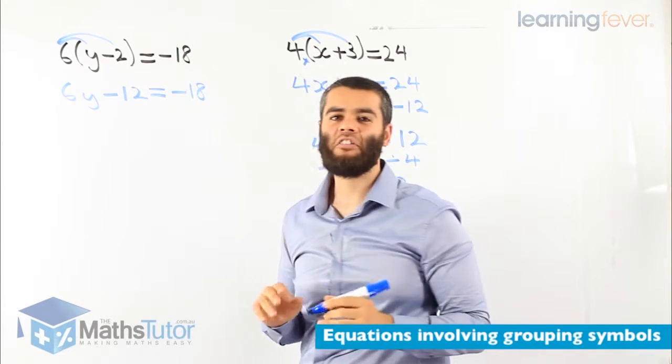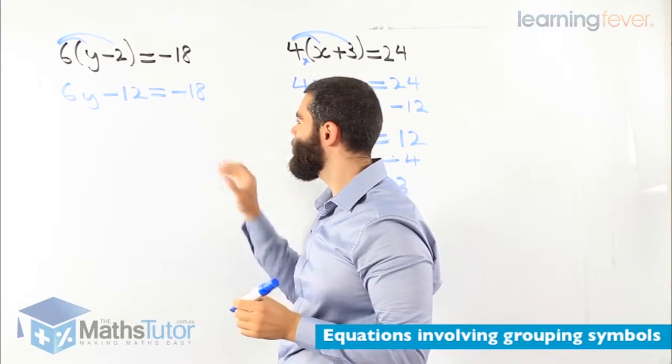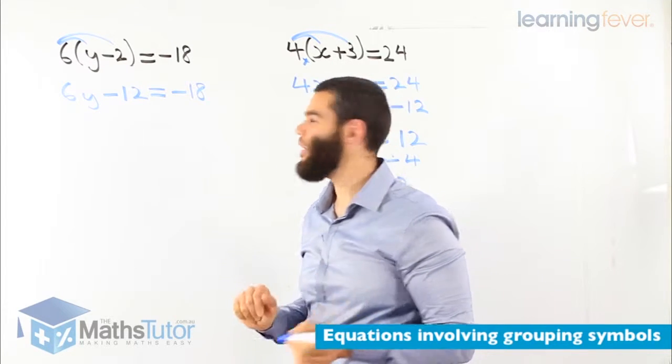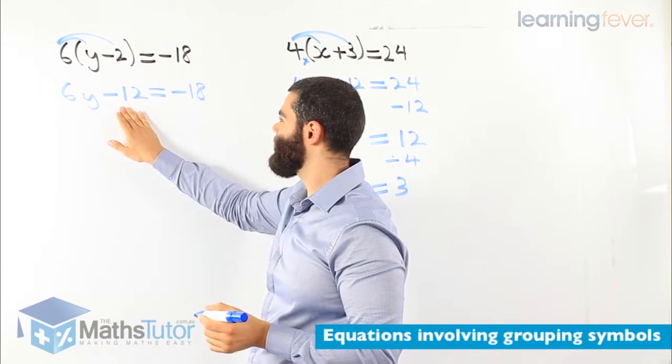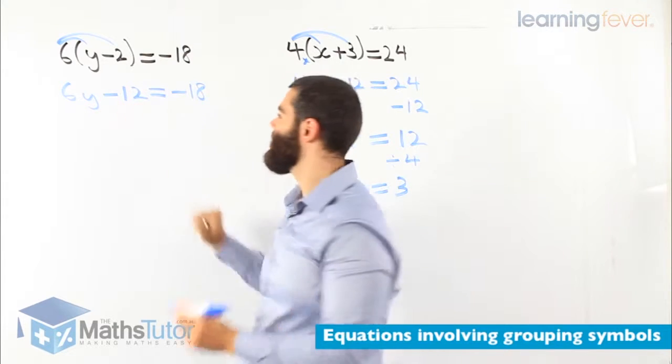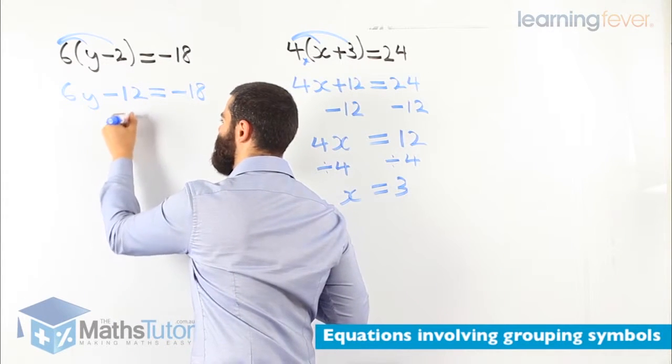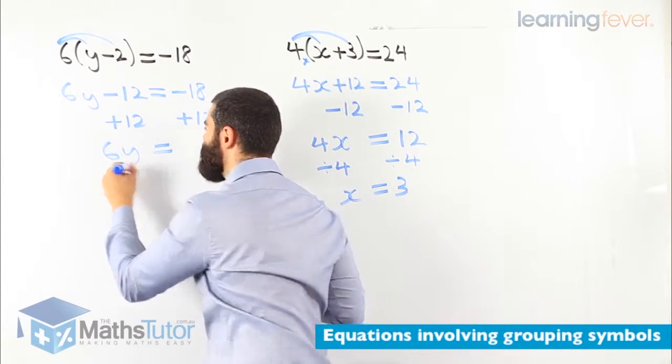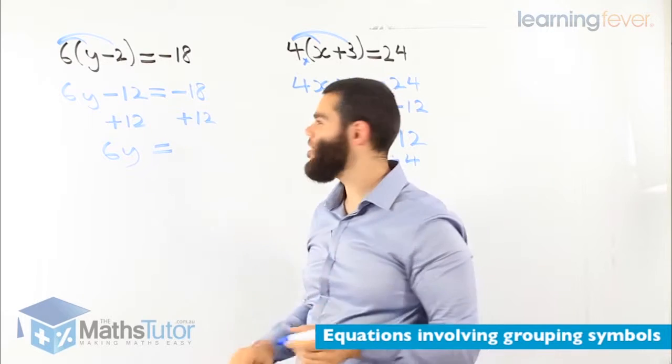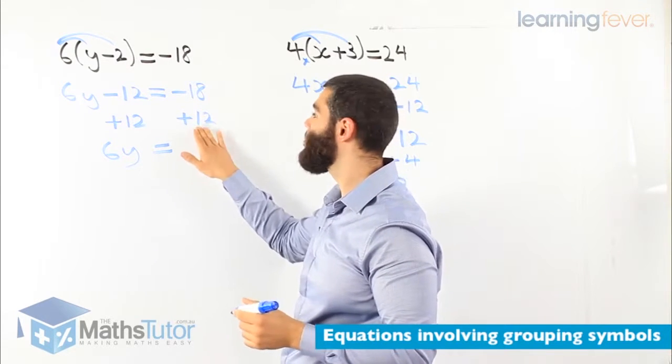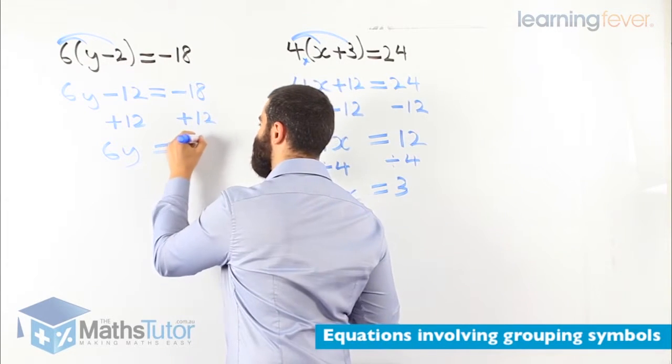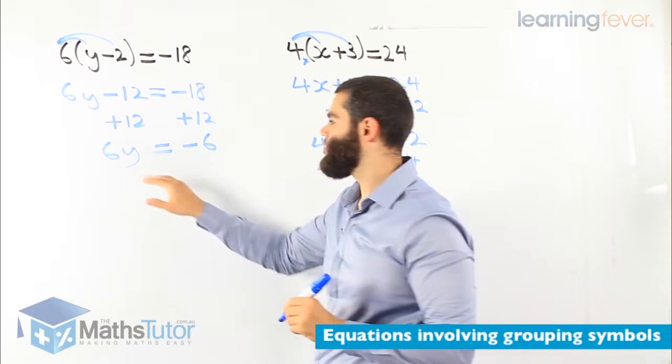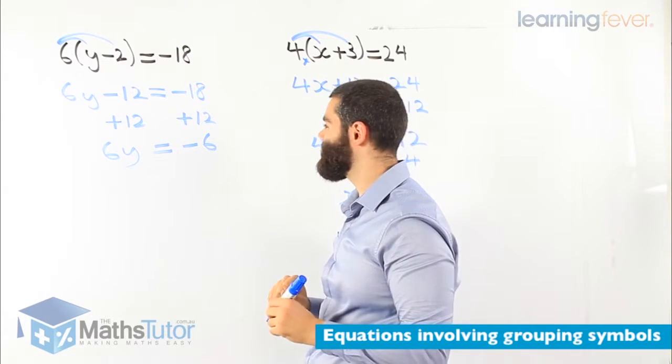So 6y minus 12 equals to negative 18. What do we do now? Our simple equation. We know we are going to get rid of the negative 12 first. So we add 12, and we add 12 on the other side. So we're left with 6y. Negative 12 plus 12 is gone.